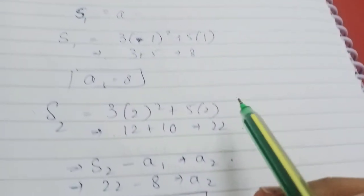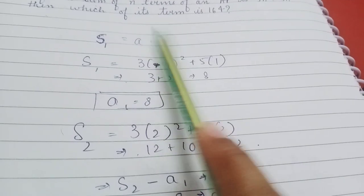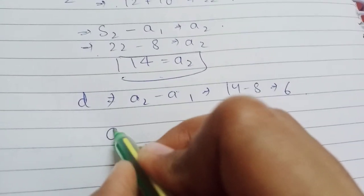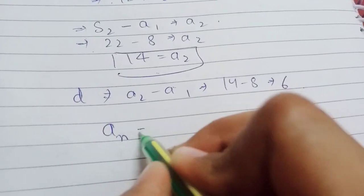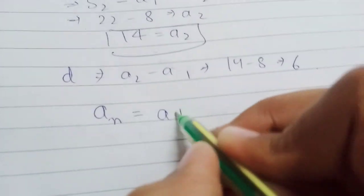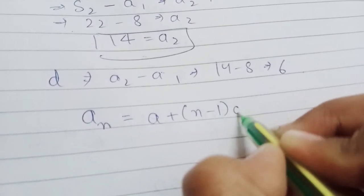So, we need to find that which of its term will be 164. Formula of nth term of AP is aₙ is equal to a plus n minus 1 into d.